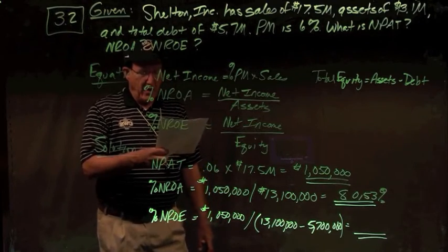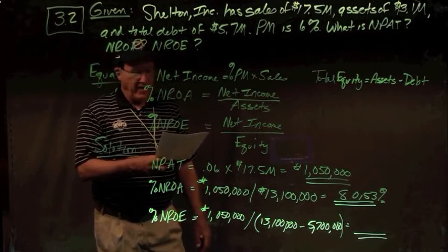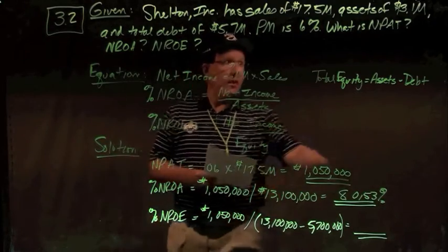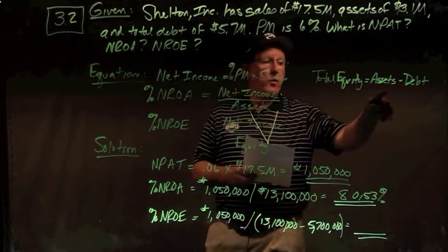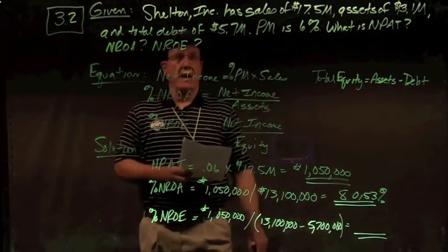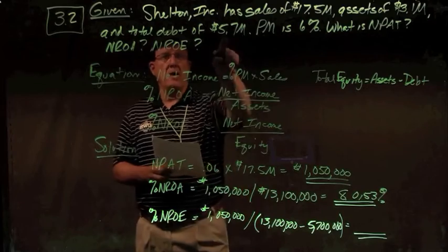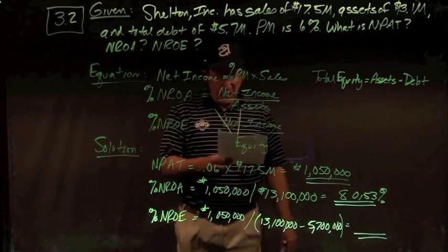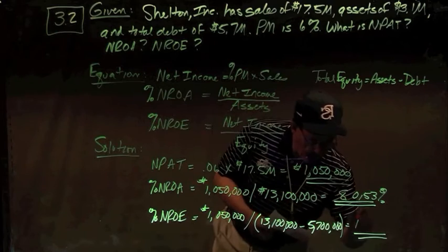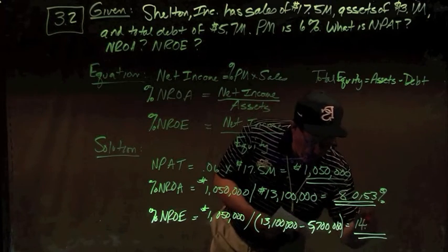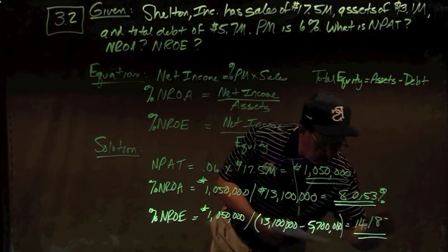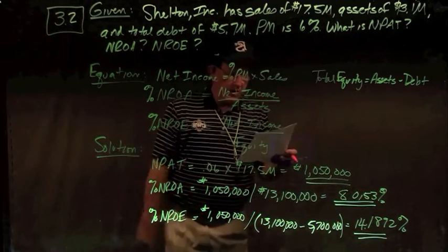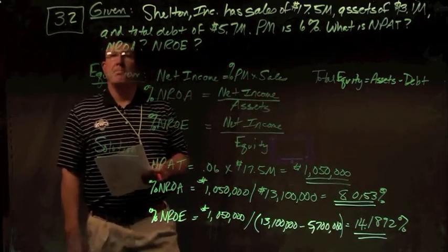For NROE, net return on equity, I take my net income over my equity. Equity equals assets of $13.1 million minus debt of $5.7 million. I get a net return on equity of 14.1892%. And there are your answers to problem number two.